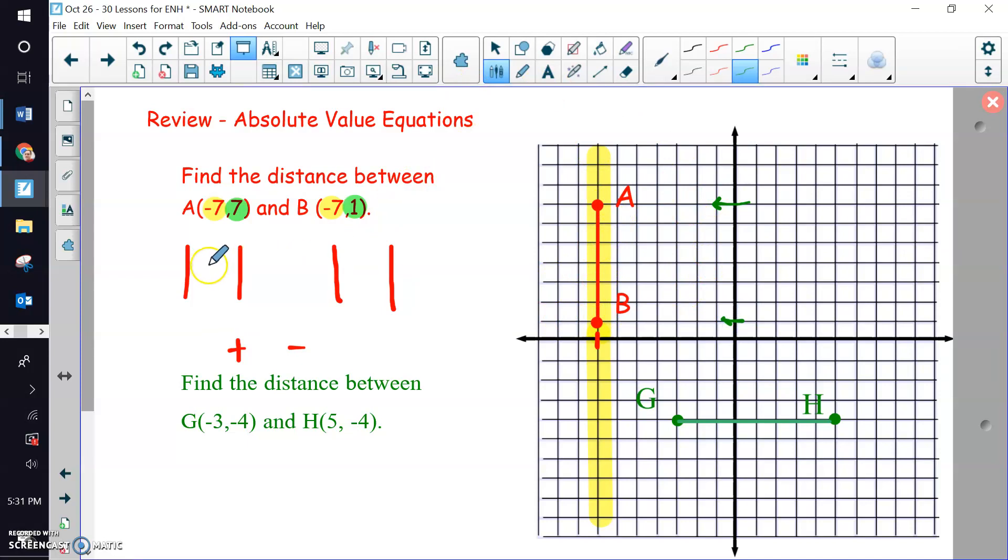So that's what we want to write in our absolute value symbols, the 7 and the 1. Now the question is, do we add them or subtract them? Well, you can review your rules that we've learned before. And if they're both positive numbers, we want to subtract those two.